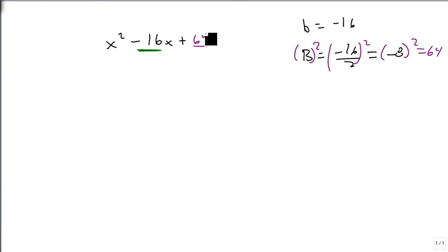And so we add 64, and when we do that, this now factors as, and this is important too, I didn't mention this before. It's an x minus 8. Whatever that half number is, that number is what goes right there, signed and all.